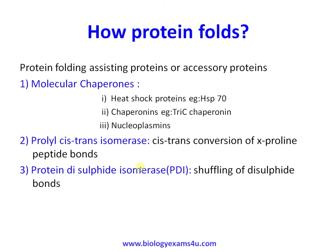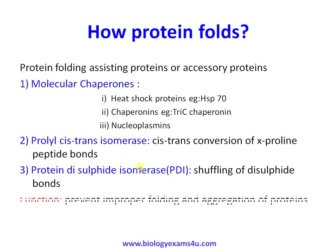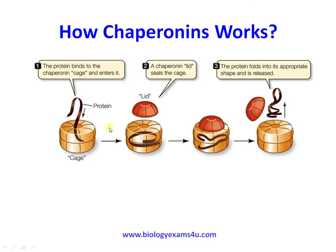The function of these proteins is not to guide the protein into proper folding but to prevent improper folding and aggregation. This is how chaperonins work: once a protein is formed in the cytoplasm, it enters the chaperonin cage, and a lid closes so the protein can fold inside without outside disturbances from other molecules in the cell.